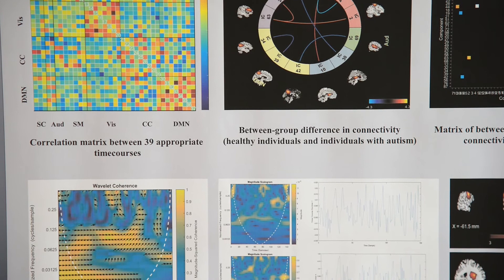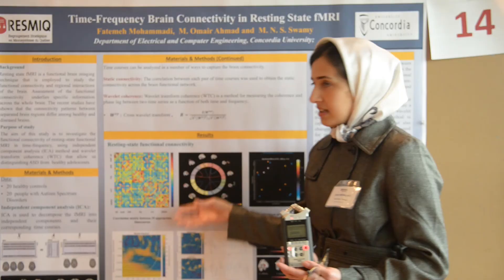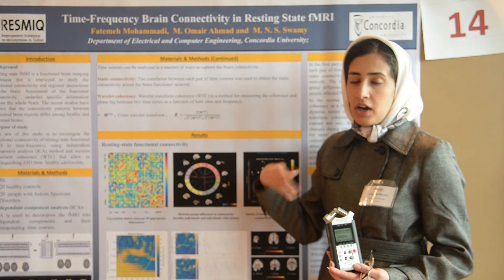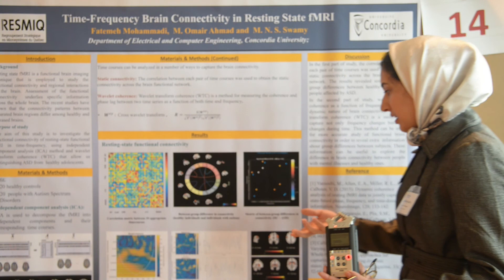As you can see here, this matrix shows the connectivity of different parts of the brain. The results show that some parts of the brain have higher connectivity and some parts have less connectivity, when comparing healthy people with people affected by autism. These results are approved by other investigations.